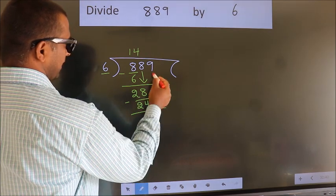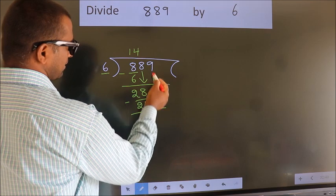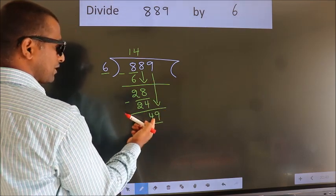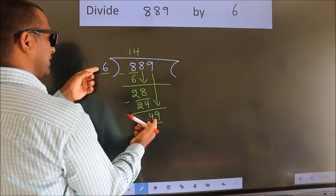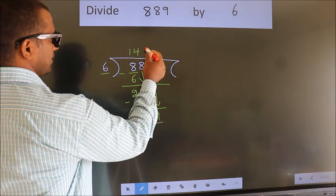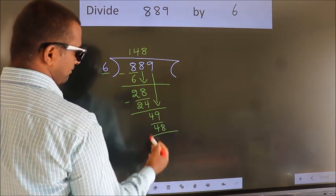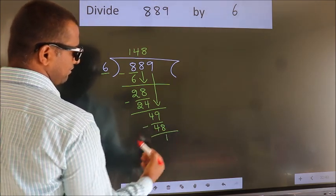After this, bring down the beside number. So, 9 down, giving us 49. A number close to 49 in the 6 table is 6 times 8, which is 48. Now, we subtract. We get 1.